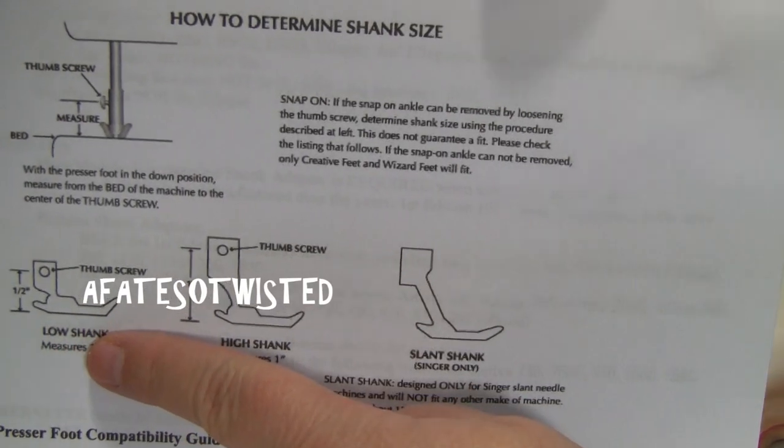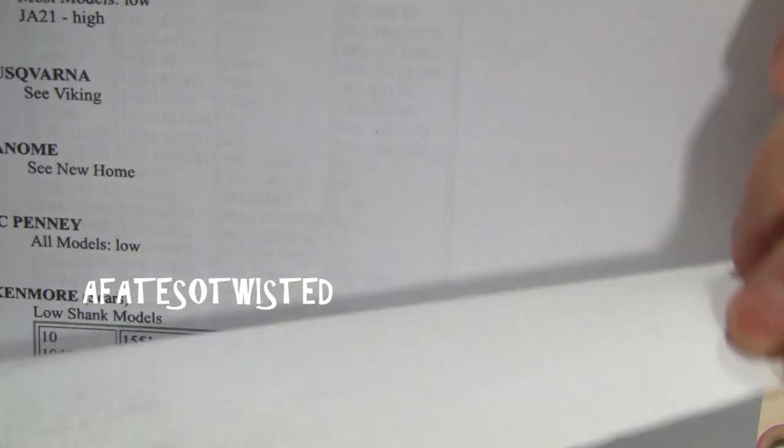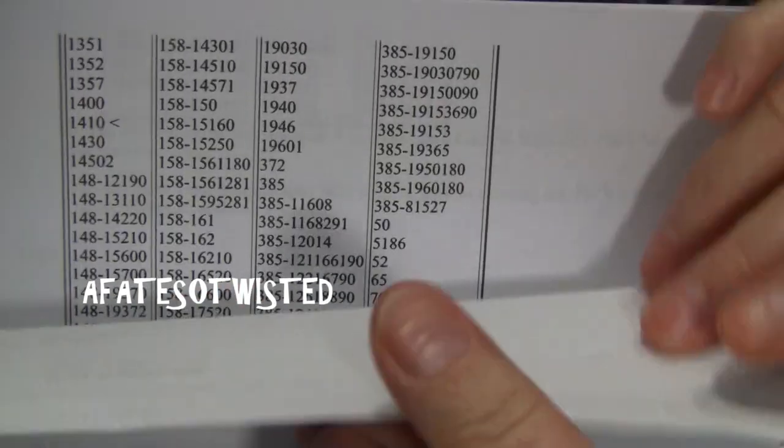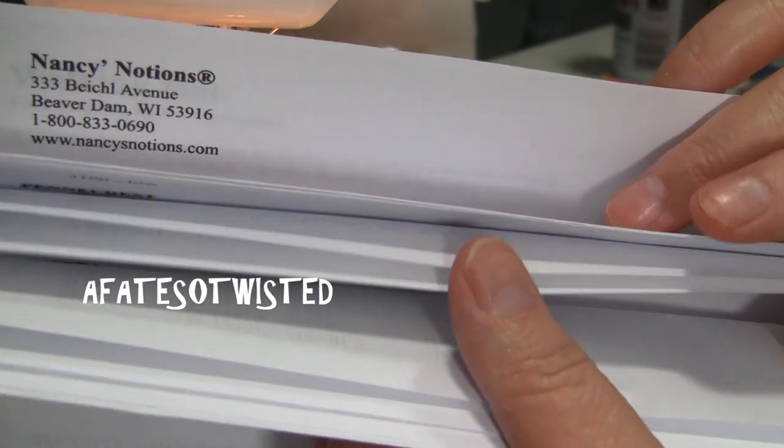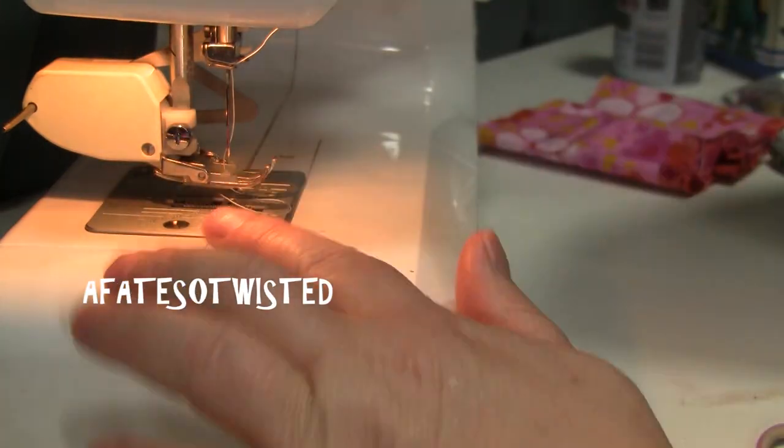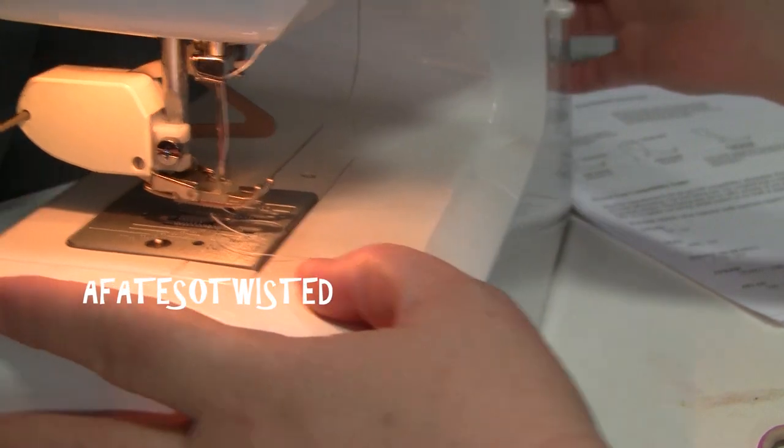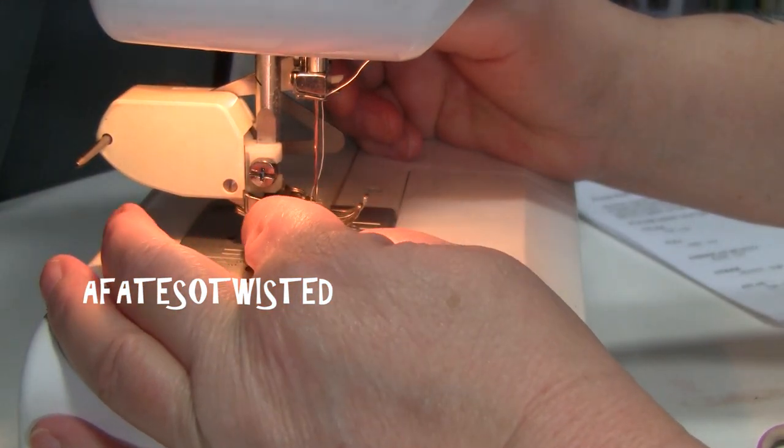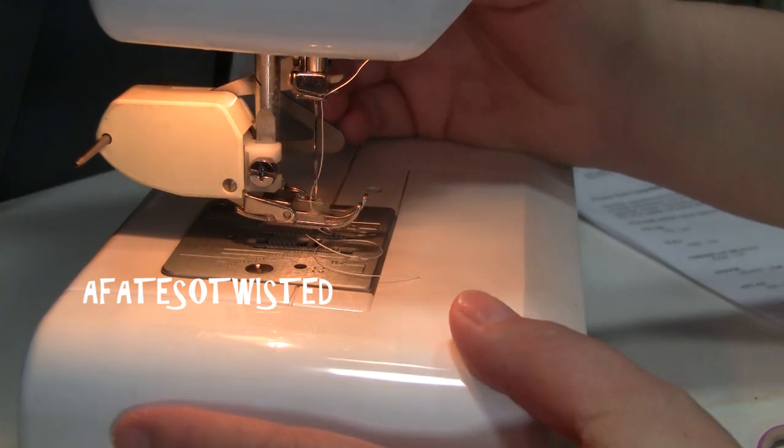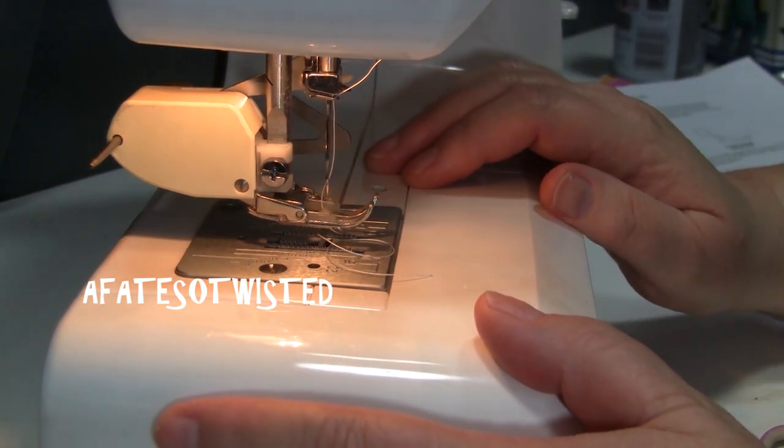You can go on this blog and she has lots of helpful things. She even has a list and list and list of machine models and makes and whether they're low shank or high shank. My Janome wasn't on there, but it's kind of obvious that it's a low shank. I mean, you know, that's just a screw hole, there's the bottom of the presser foot, that's not an inch.